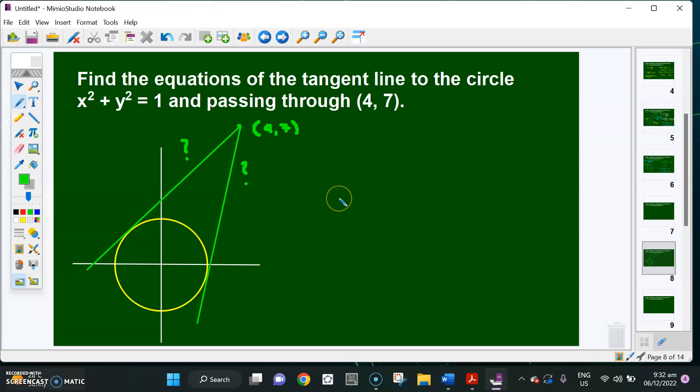So since we're looking for the equation of the tangent lines, it's either we get the slope of the line or another point. Since the mention is tangent lines, maybe we will focus on the point of tangency. Let's label this as point A with coordinates x₁, y₁ and then another point of tangency here, point B with coordinates x₂, y₂.